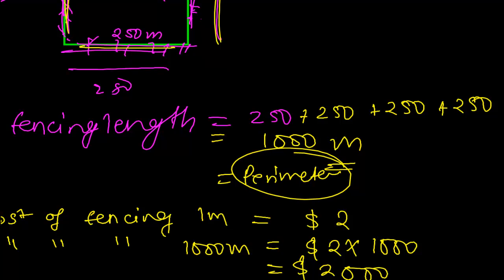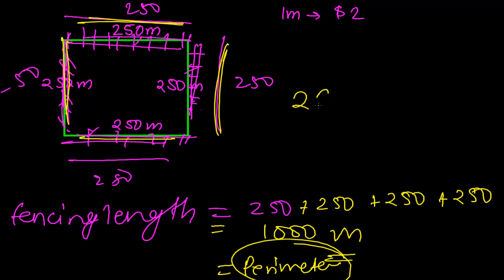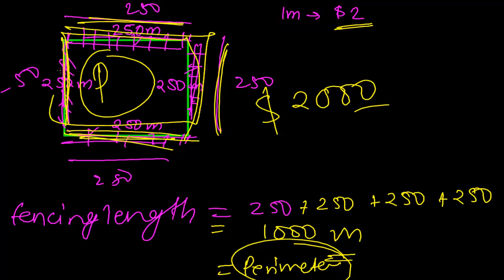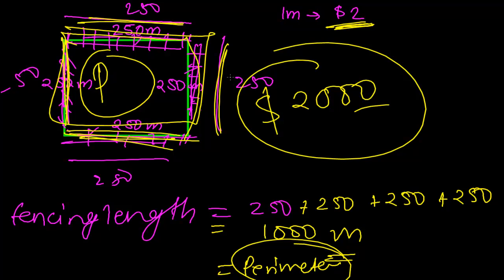Two times 1000 is $2000, so the cost of fencing this whole square park is $2000. For one meter we pay $2, so for 1000 meters we pay $2000. The key is to find the perimeter — the sum of all boundaries — then multiply by the rate. That gives you the total fencing cost. I hope you understand, and we'll do more similar problems in the next video. Bye!